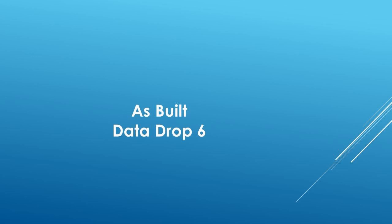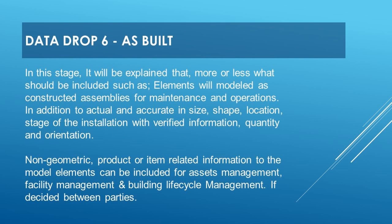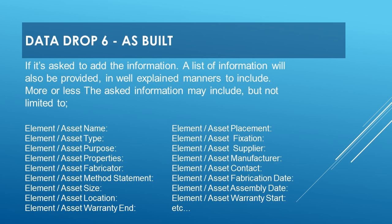Let's look at Data Drop 6 — the as-built stage. In this stage, elements will be modeled as constructed assemblies for maintenance and operations. In addition to actual and accurate size, shape, location, and stage of installation with verified information, quantity, and orientation. Non-geometric product or item related information to the model elements can be included for asset management, facility management, and building life cycle management, if decided between parties.